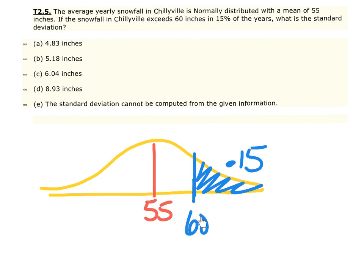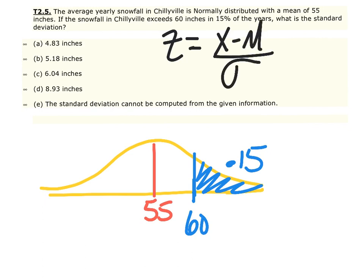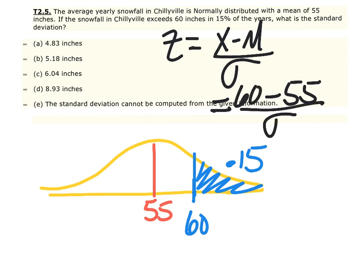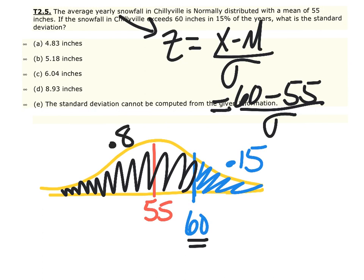This is the raw data, and we can compute a z-score using the formula: z = (x - mean) / sigma. We know the mean is 55 and the piece of data is 60. We don't know the standard deviation, but we can get the z-score using inverse norm of 0.85, with mean 0 and standard deviation 1, which gives us 1.03. So the z-score at 60 inches is 1.03.